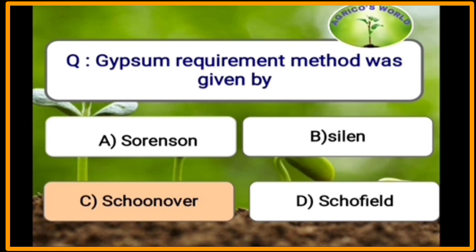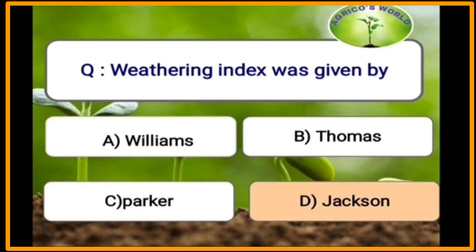The gypsum requirement method was given by Schoonover. The weathering index was given by Jackson.